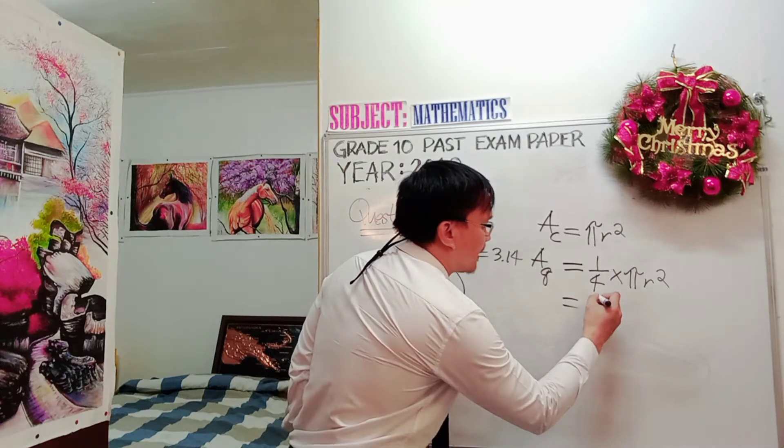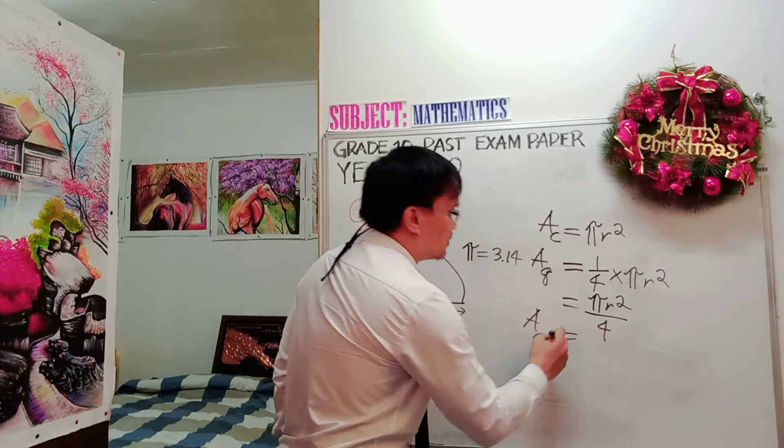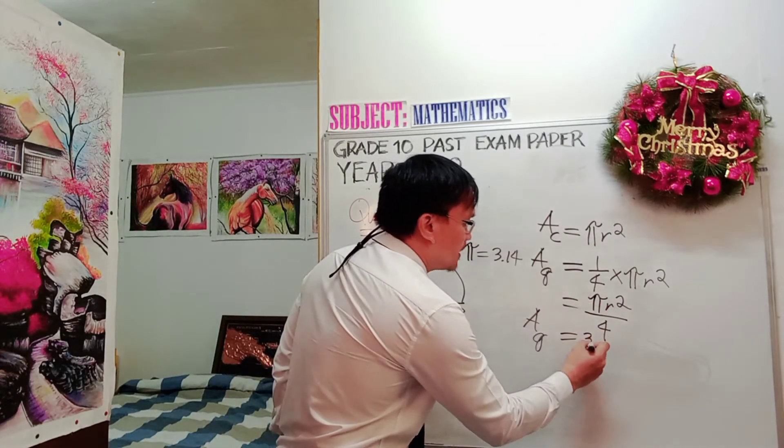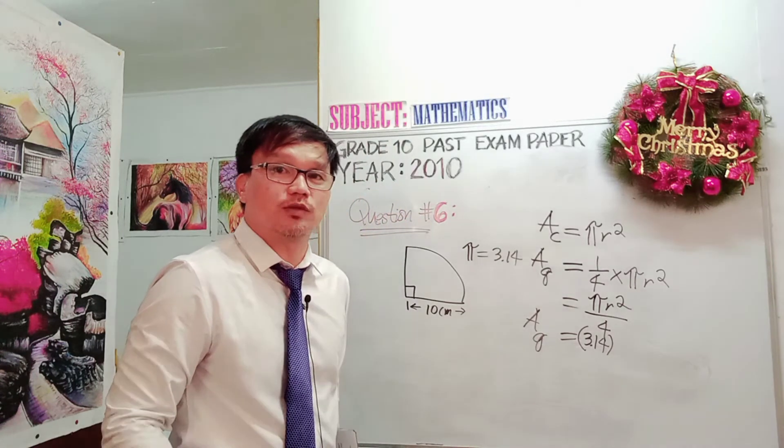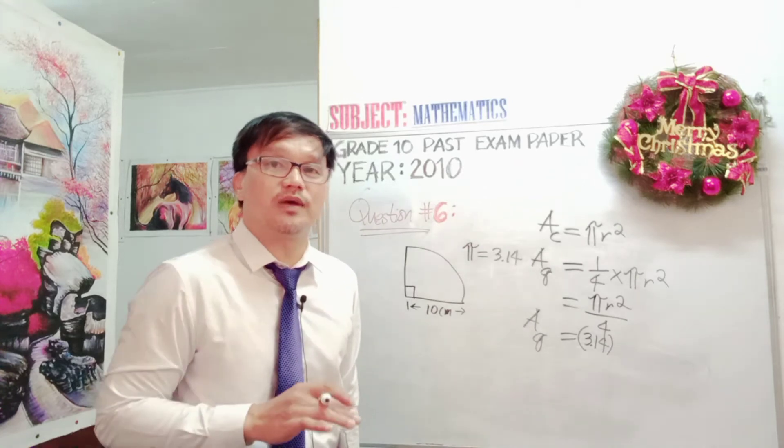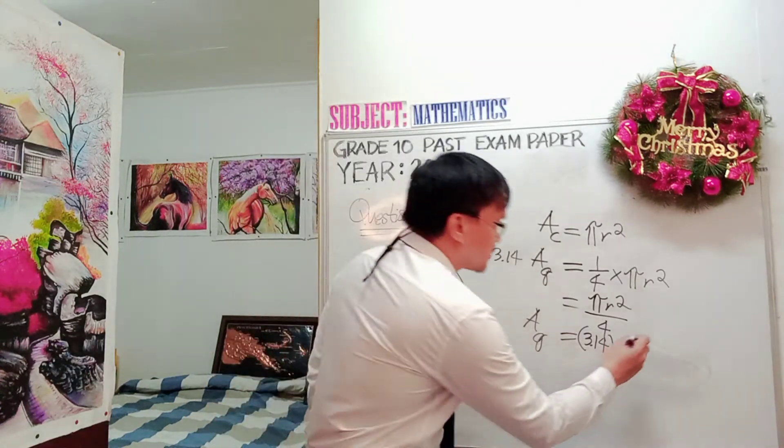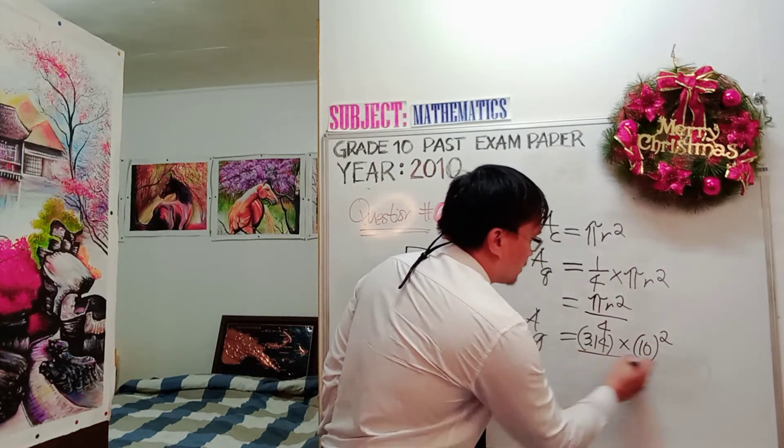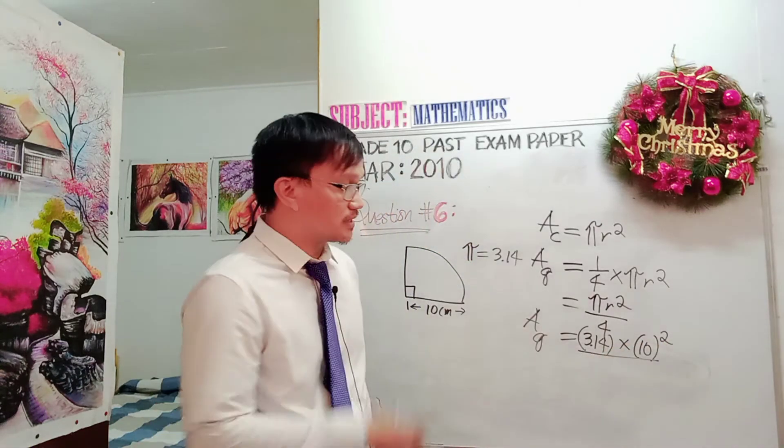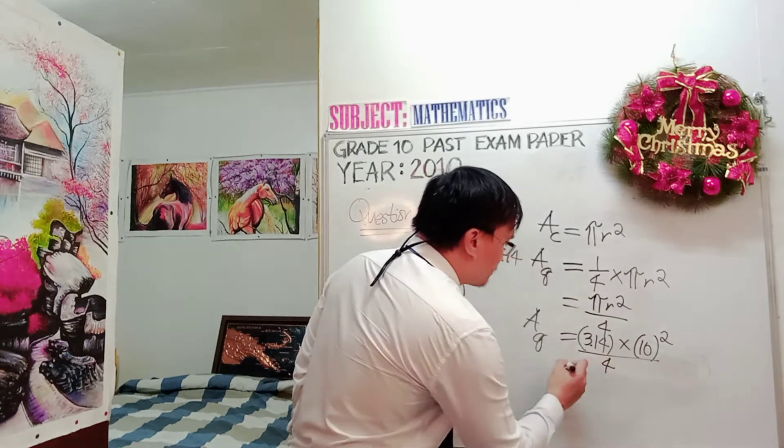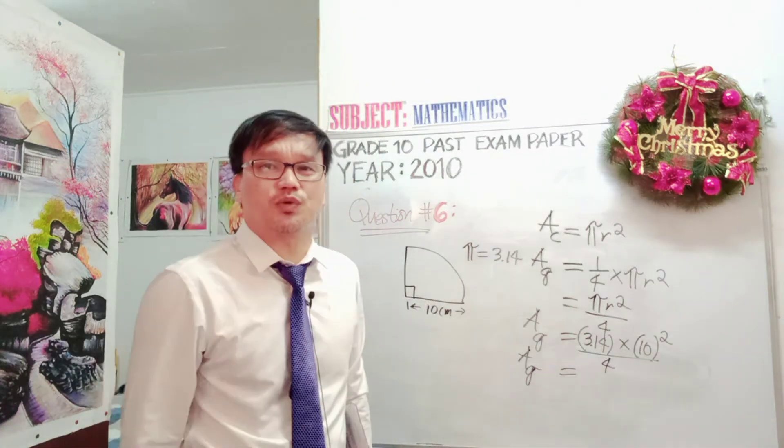Because it is a quadrant, means a quarter of a circle, then the formula now becomes area of the quadrant is equal to one quarter multiplied by pi r squared. Where do we get one quarter? One quarter is because it is only a quadrant, one fourth of a circle, one quarter of a circle. So one fourth times pi r squared. Or you can rewrite this one as pi r squared divided by 4. So the area now of the quadrant, you substitute the value.